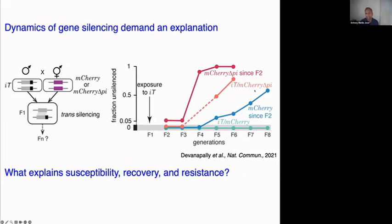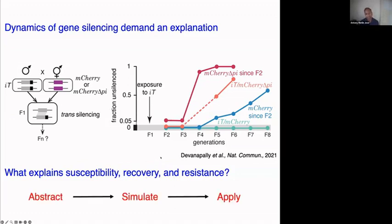If you remove the 'I' sequence, mCherry expression starts recovering and fewer animals show gene silencing. The same is true for mCherry delta-pi. But here's the interesting case: if you have both 'I' and mCherry delta-pi, 'I' continues to be silenced but mCherry delta-pi is back on. So you have susceptibility, recovery from silencing, and even resistance. Standard ideas about DNA don't work here because the DNA is essentially the same throughout.